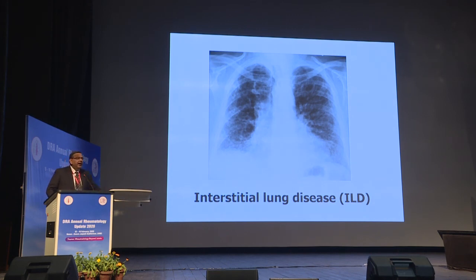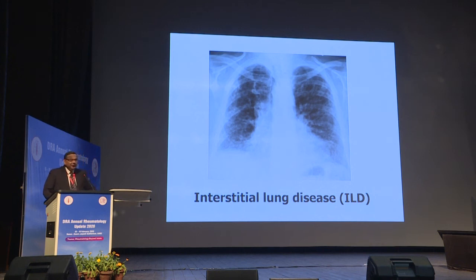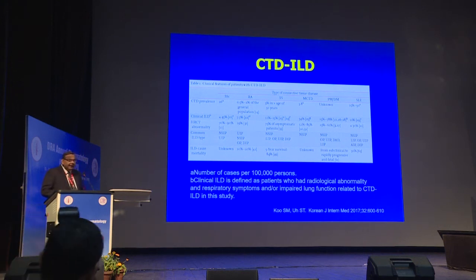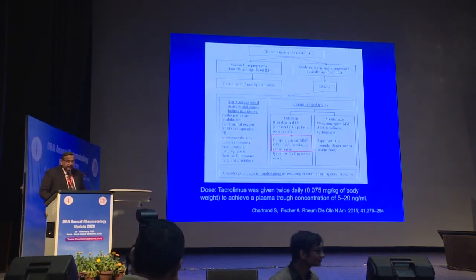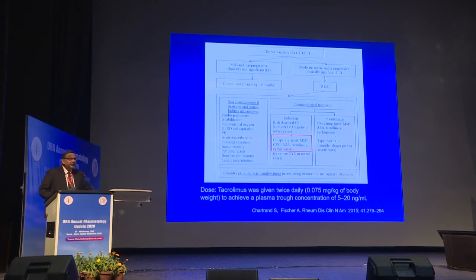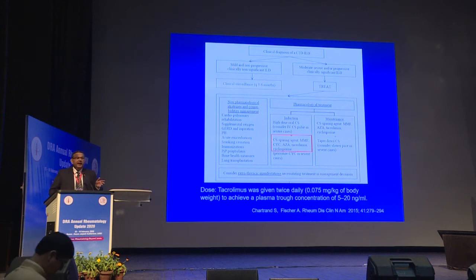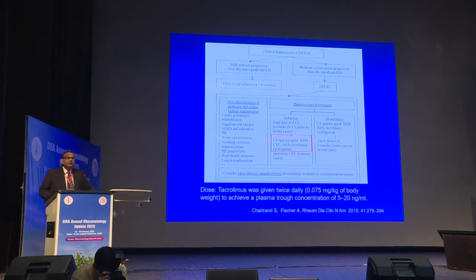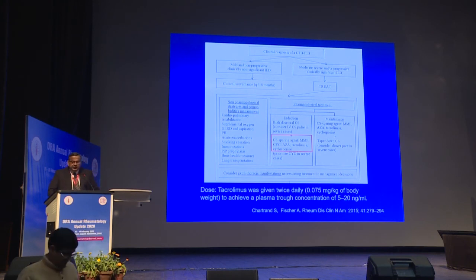Interstitial lung disease is another area for tacrolimus use, particularly relevant as we discuss ILD in connective tissue diseases. In lupus, about 15 percent of patients have ILD. Importantly, not all patients with ILD need treatment — you must know when to hold. Mere crackles at the base with a few ground-glass opacities should not prompt immediate treatment. Significant ILD is treated with corticosteroids and steroid-sparing agents, of which tacrolimus is one of the drugs utilized.